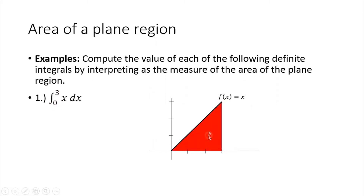So, what's the region being formed by this interval 0 to 3 and the line f(x) = x? This is the region, and we are going to compute the area of this region. In algebra, we already know the formula for finding the area of a triangle. Recall: the area of a triangle is equal to base times height over 2, and we will just apply that one first.